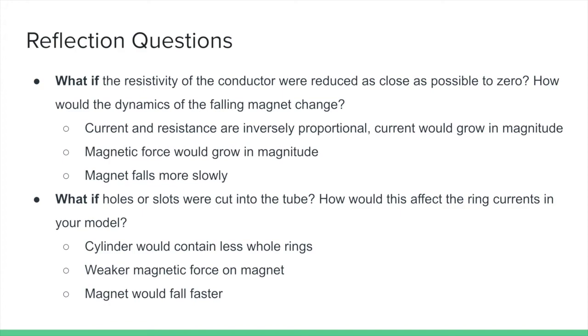Also, what if holes or slots were cut into the tube? How would this affect the ring currents in your model? The cylinder would contain less whole rings, so there is a weaker magnetic force acting on the magnet, allowing the magnet to fall faster. Thanks for listening!